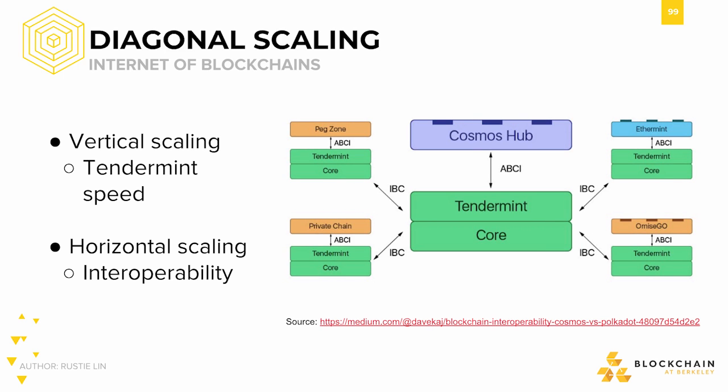We won't dive too in-depth here, but the general topology of the Cosmos network consists of hubs and zones, each either running Tendermint or having a data transform layer. Hubs connect multiple zones together. Hubs and zones are all blockchains supporting their own applications, whether they be simple payment blockchains or a full-fledged port of Ethereum onto Tendermint.